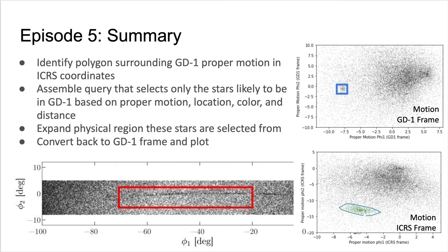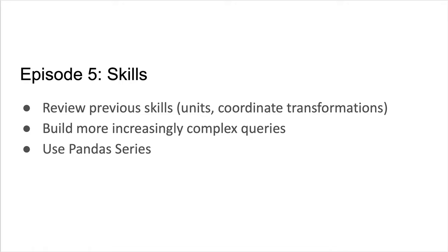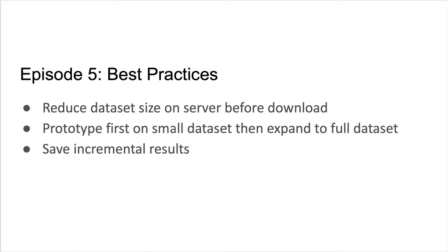Finally, once we have created and run a query for this larger region selecting only stars with the expected proper motion of GD1, we will convert our results back to the GD1 reference frame and plot them. This episode demonstrates building more and more complex queries while reviewing many of the skills developed in previous episodes and taking advantage of the functions we have written. Additionally, it introduces the Pandas Series object. A key best practice shown in this episode is reducing the size of a retrieved data set on the server prior to downloading it — we did this by developing a prototype on a subset of the data locally and then expanding to the full data set when we had a well-developed set of filtering criteria.